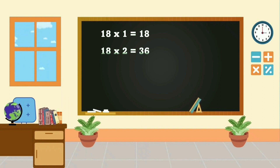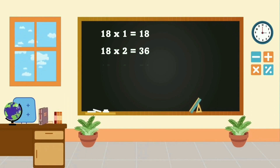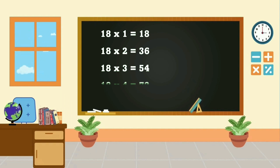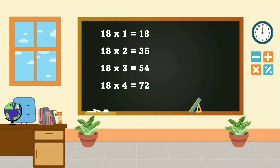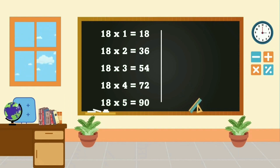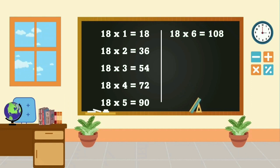18, 2's are 36. 18, 3's are 54. 18, 4's are 72. 18, 5's are 90. 18, 6's are 108.